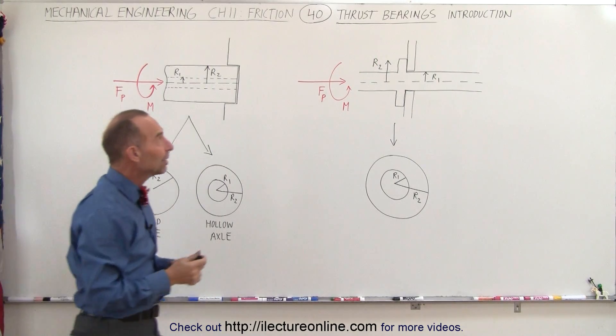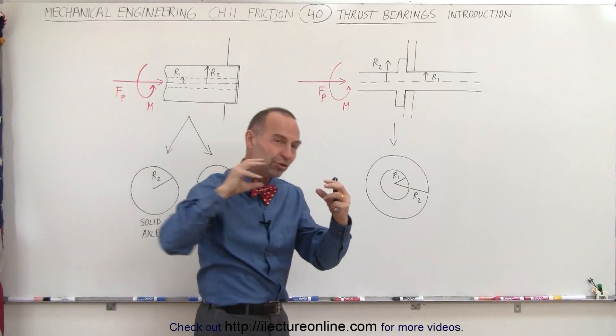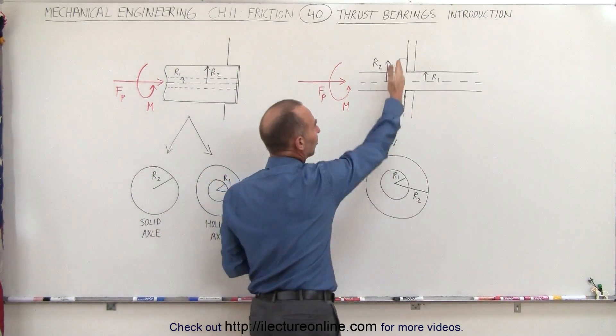We could also have a thrust bearing that has a sleeve attached to the axis in such a way that you can push the axis through an opening but then it's prevented from going any further by the sleeve.